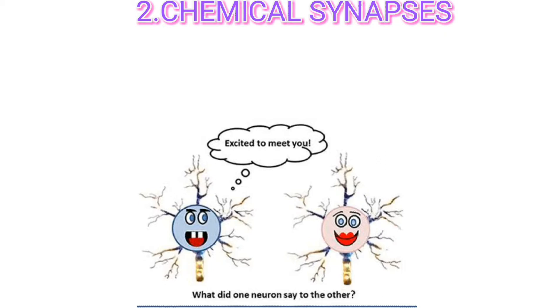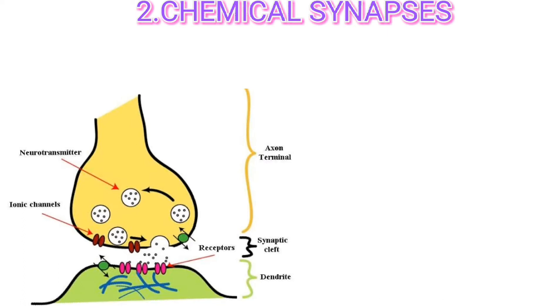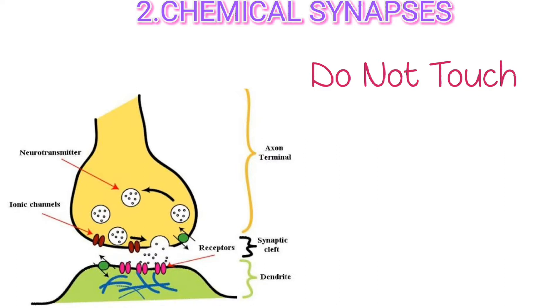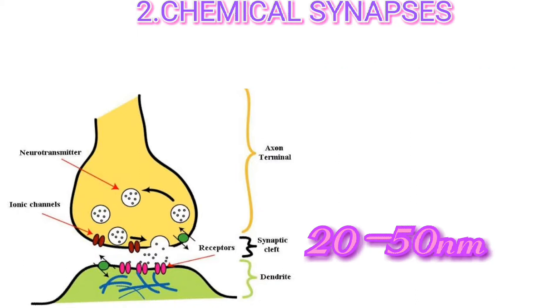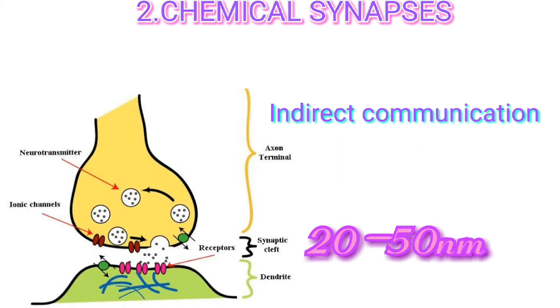Most synapses in the brain are chemical synapses. Here, the plasma membranes of pre-synaptic and post-synaptic neurons are close but do not touch. They are separated by a synaptic cleft, which is about 20 to 50 nanometers, that is filled with interstitial fluid. This is an indirect form of communication — that is, the communication occurs via neurotransmitters.